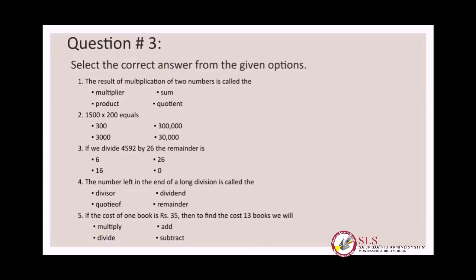Number five: if the cost of one book is rupees thirty-five, then to find the cost of thirteen books we will — multiply, add, divide, or subtract? As I have told you in multiplication word problems: when we know the value of one and have to find the value of more, we multiply. So we will circle option number one, which is multiply. The answer key is on the next page.